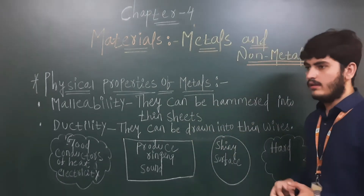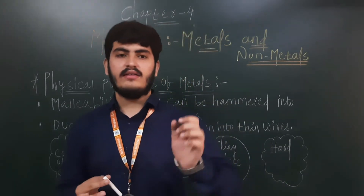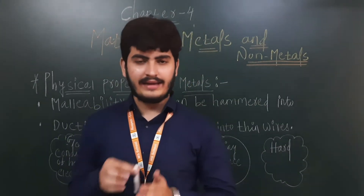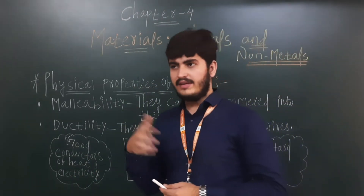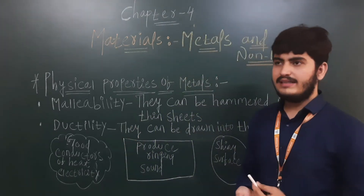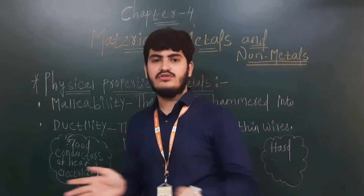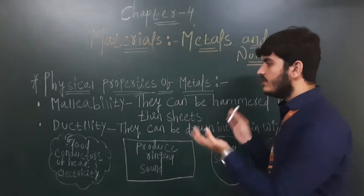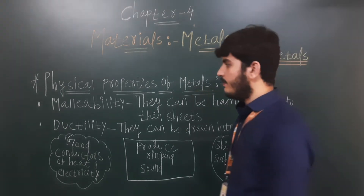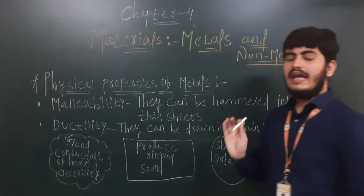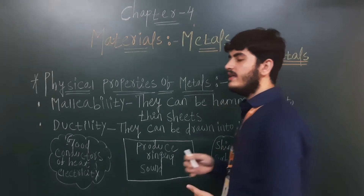Many times you have seen an iron smith beating iron with a hammer and it changes its shape. You have also seen silver foil used for decoration of sweets. When you beat iron with a hammer, its shape changes. So now we are going to learn about physical properties of metals. The first one is malleability — metals can be hammered into thin sheets.